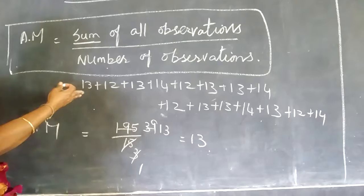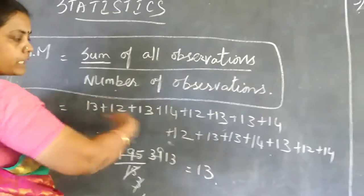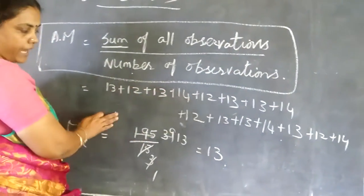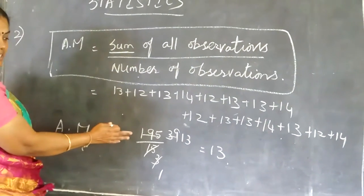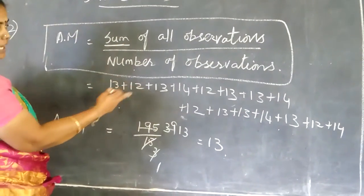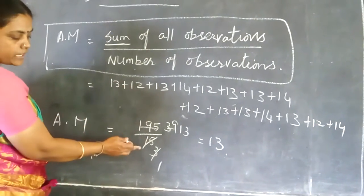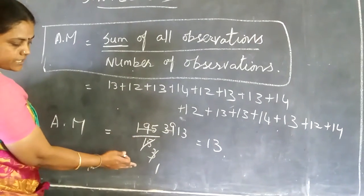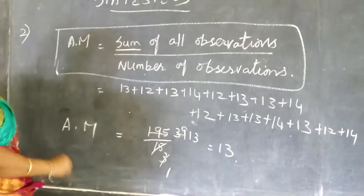Now I am going to add all the values — 13, 12, 13, 4, etc. — these values are going to be added. When I add them, I am getting the value to be 195, and there are 15 values, so divided by 15. After simplification, we will be getting the answer to be 13.